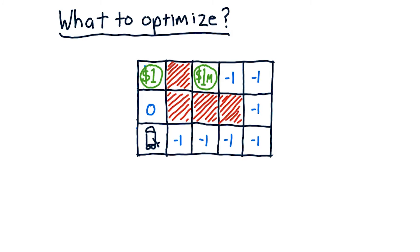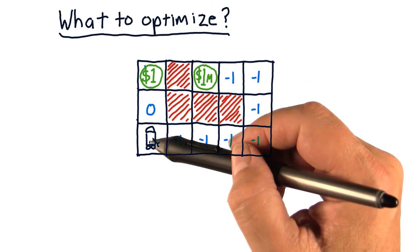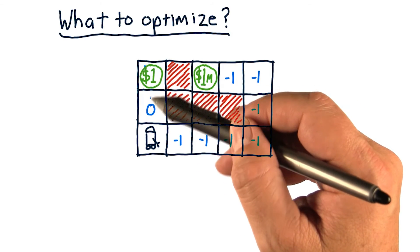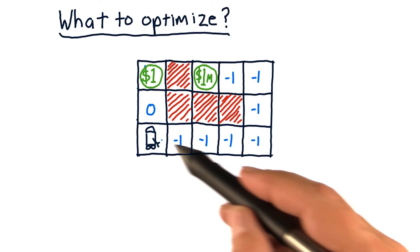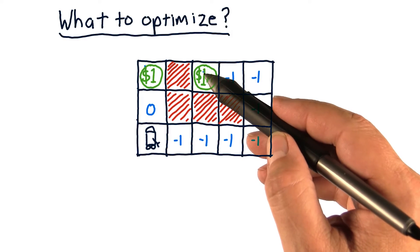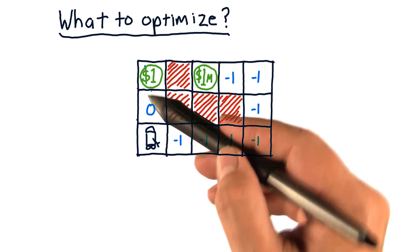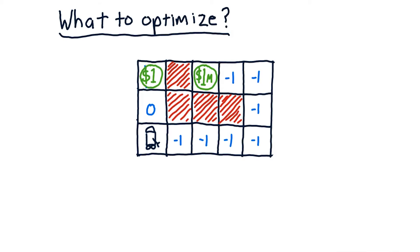Now if we say that what we want to optimize is the sum of all future rewards, then it doesn't matter whether we go this way and just get that dollar over and over again, or if we go this way, get the million dollars, come back, and then get that one dollar over and over again. There's no difference because they both sum to infinity over time.